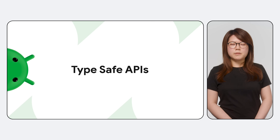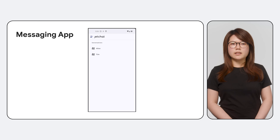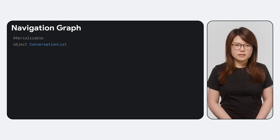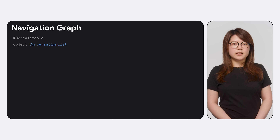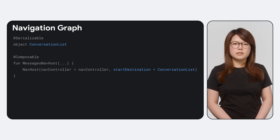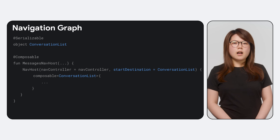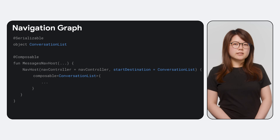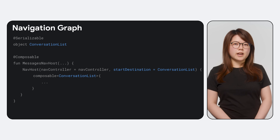To demonstrate the new APIs, let's imagine we're building a messaging app with a screen showing a list of open conversations. First, let's declare a route called ConversationList. We must annotate this with @Serializable so that internally the navigation library can serialize this object into a string route. Next, we define a base graph by calling navhost and pass in our ConversationList as the start destination. After that, we call NavGraphBuilder's composable API and pass in ConversationList as a type parameter. This type parameter defines the unique route for this composable, and you'll notice that you no longer need to provide a string route.